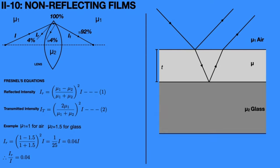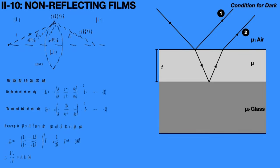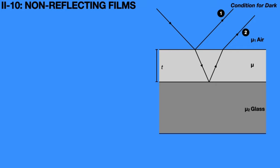Consider the two emergent light rays, labeled 1 and 2, as shown in the animation. When these two light rays 1 and 2 superpose on each other and interfere, the condition for dark fringes means the thin transparent film becomes a non-reflecting material. Hence, the condition for darkness is: delta equals 2 mu t cos r equals (2n + 1) lambda by 2. Here n equals 0, 1, 2, 3, and so on. Mu is the refractive index of the thin transparent material, t is the thickness of the thin transparent material, and lambda is the incident wavelength of the light ray.